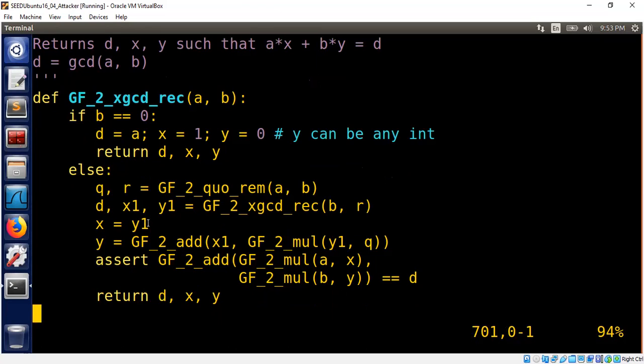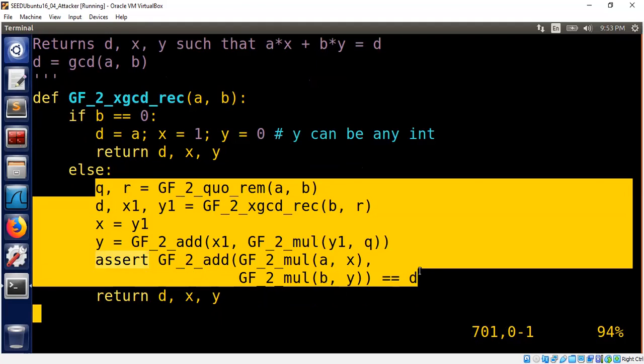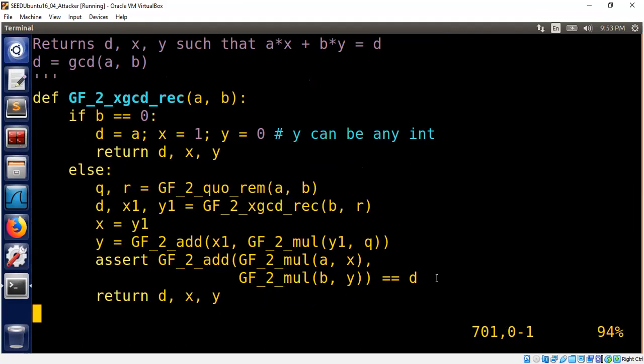So why is this correct? The correctness I have proved in the case of numbers, I put the reference to it in the description. So it's a video that we recorded a long time ago, so you can watch that. For any general set of numbers A and B, you can find X and Y such that A times X plus B times Y equal to D.